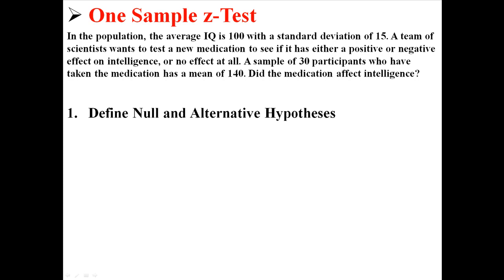The first part is to define the hypotheses. Our null hypothesis is that the population mean is 100, and our alternative hypothesis is that the mean is not 100. The population mean is 100, so we expect our null hypothesis to be 100. The alternative is that intelligence was either lowered or increased — basically, we're testing to see if it's different than the expected population mean of 100.